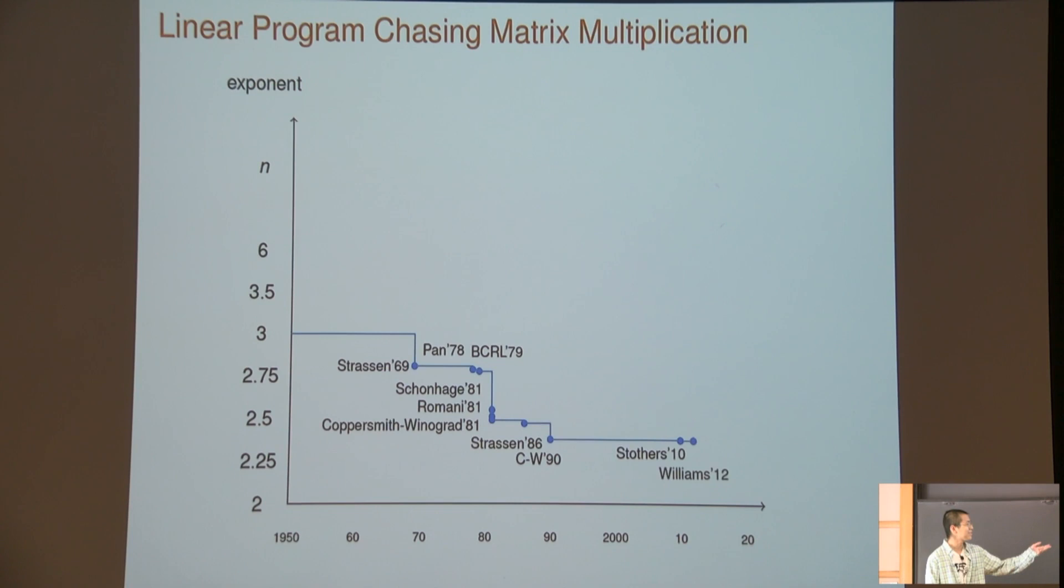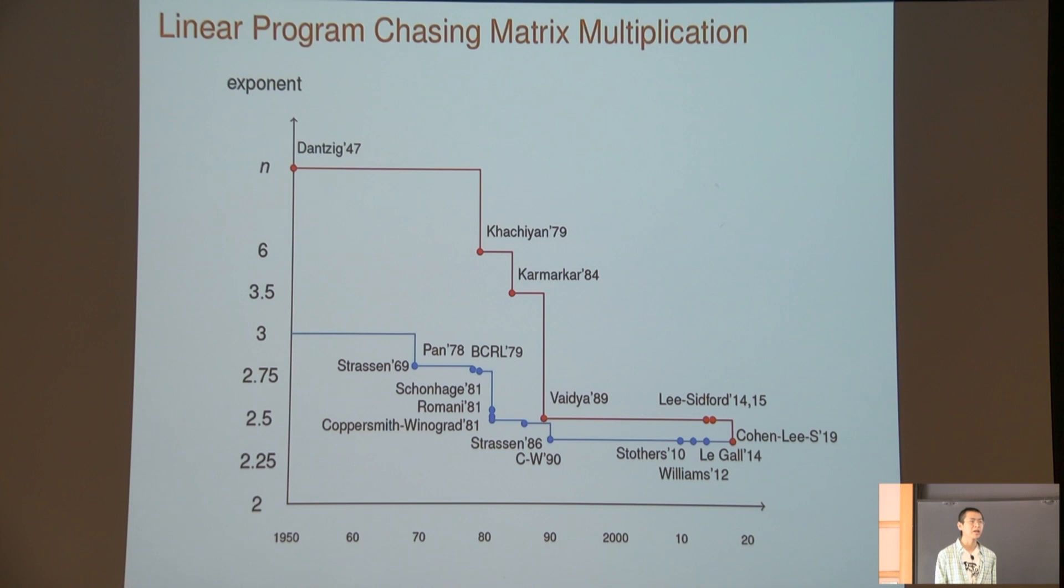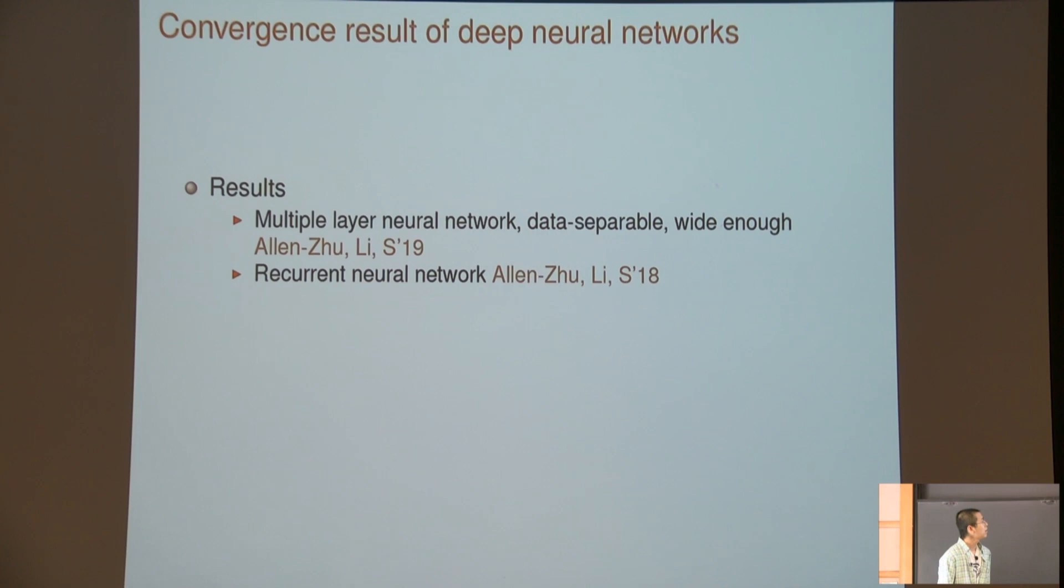At the beginning, we knew this could be done in n-cubed time. Then people kept pushing this bound, and at some point we believed 2.5 is probably the right answer. And then we actually broke this barrier. However, over the last 30 years, the algorithm for matrix multiplication barely improved—the most recent three papers made progress of only 0.001. For linear programs, at the beginning we knew it runs in exponential time, then polynomial time, then we pushed it to 3.5. We believed Vaidya's algorithm at n to 2.5 was probably the best thing, and it remained stuck for 30 years. Recently, we showed that if you want to solve a linear program, you just need n to omega time. The reason this is almost the end is because if you just want to solve a linear equation Ax equals b without constraints, the best algorithm we know is also n to omega time.